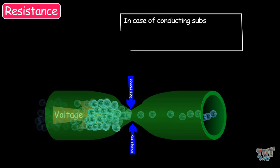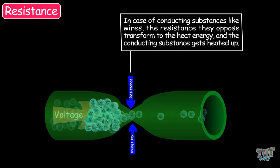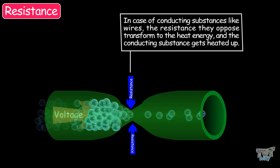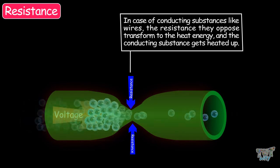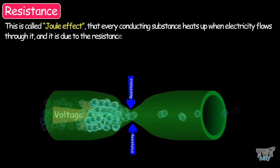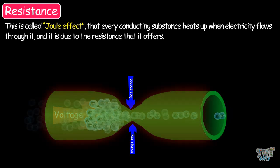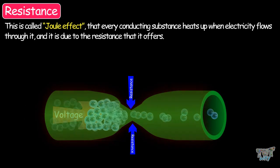In the case of conducting substances like wires, the resistance they oppose transforms to heat energy. And the conducting substance gets heated up. This is also called the Joule effect. Every conducting substance heats up when electricity flows through it, and it is due to the resistance that it offers.